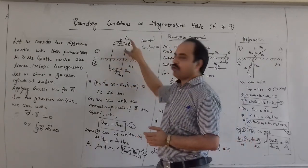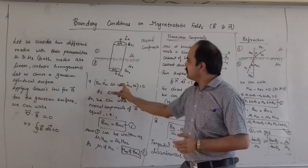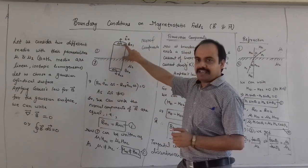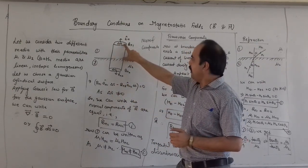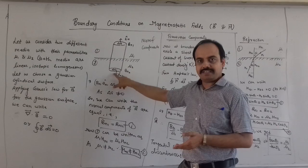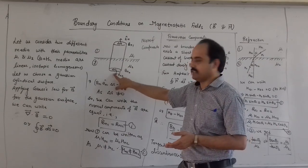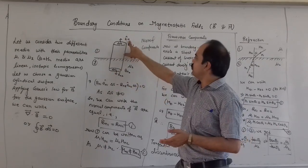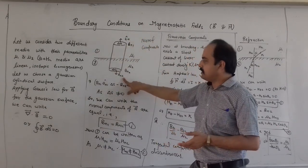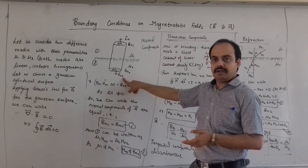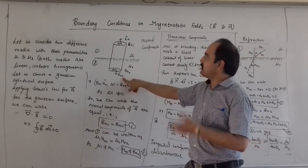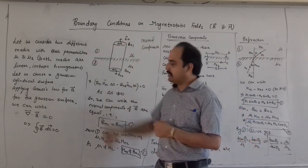Let us consider one Gaussian cylindrical surface with delta S as the area for the upper surface and delta S as the area for the lower surface. This is the unit vector in the upward direction and this is the unit vector in the downward direction. So let us derive the boundary conditions.